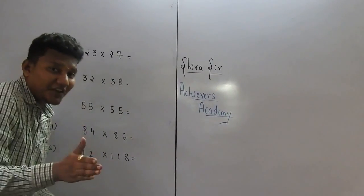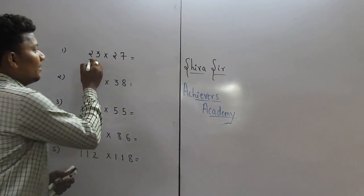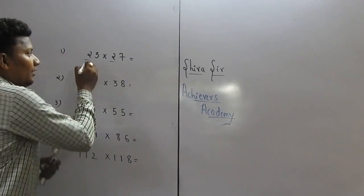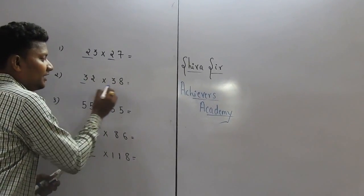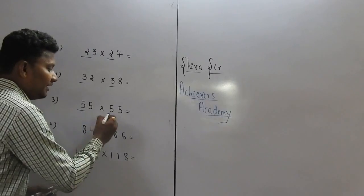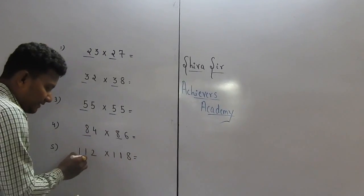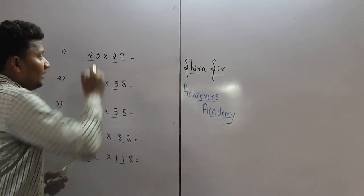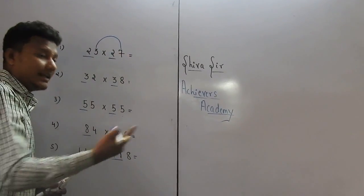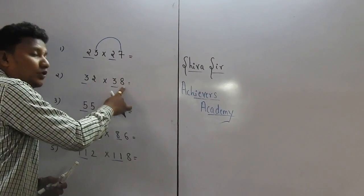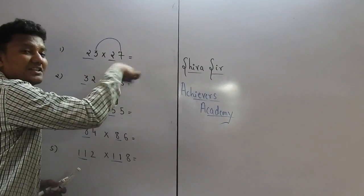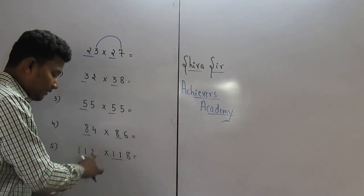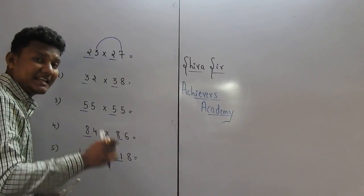But this trick is only applicable when the first digit is the same. The first digit has to be same. See here also the starting digit is same. And then next step number 2: the sum of the two digits should be equal to 10. So 3 plus 7 is 10, 2 plus 8 is 10, 5 plus 5 is 10, 4 plus 6 is 10, 2 plus 8 is 10. Then only the trick is applicable.